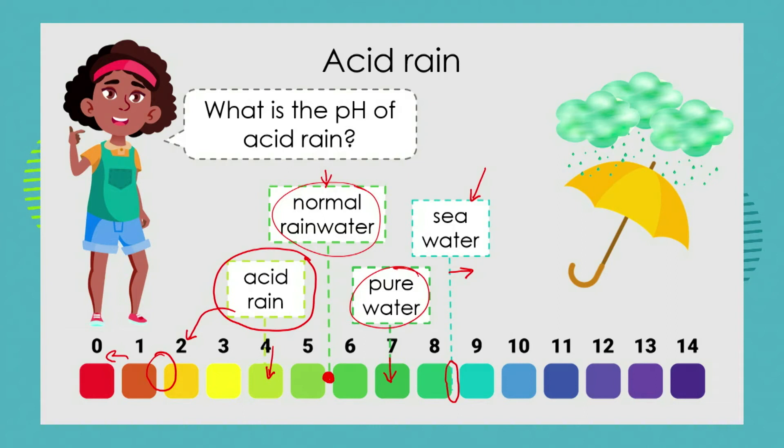We need to understand that acid rain doesn't just fall in the one spot where it was made. The clouds get blown around by the wind, so the acid rain could have been produced in one area but fall in a completely different area and have consequences there. If acid rain just fell where it was made, we could probably make a plan. But the fact is that the chemicals drift with the wind and the acid rain can fall in other areas.